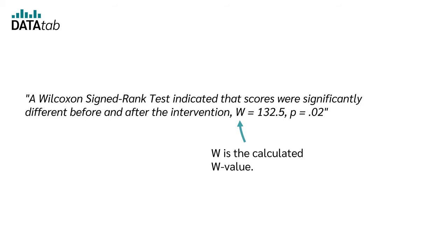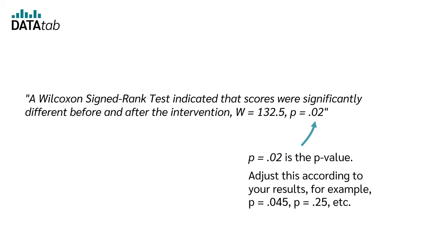W is the calculated W-value. P = 0.02 is the p-value. Adjust this according to your results, for example, p = 0.045, p = 0.25, and so on.